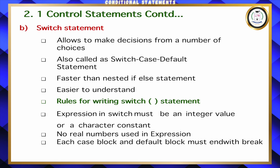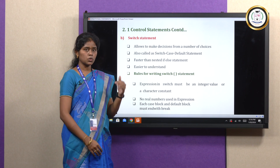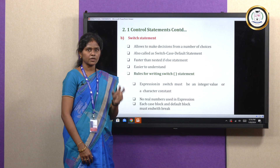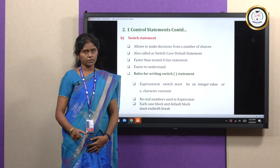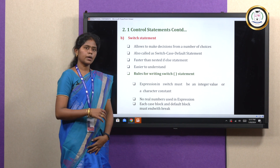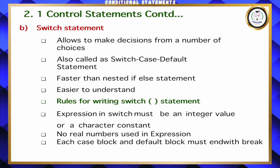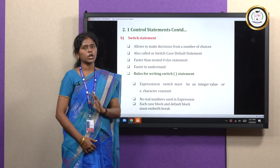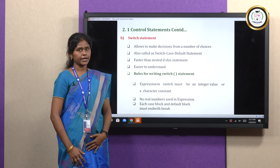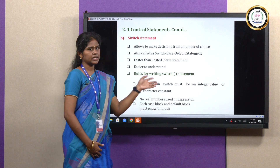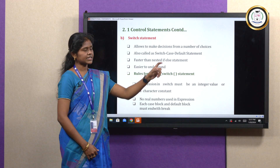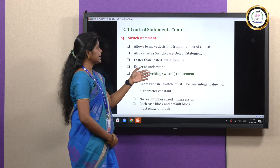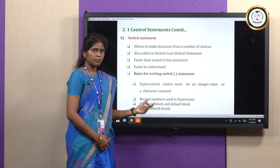Next we are going to see the switch statement. Instead of going through all conditions, the user can choose from given multiple choices. There are some rules for the switch case statement: the case statement must be specified, must end with a colon, and should end with a break. The default statement is optional — if the user does not choose from the given choices, the default statement will automatically be displayed. The switch statement is faster than the nested else-if because we directly jump to the chosen case without evaluating all conditions.